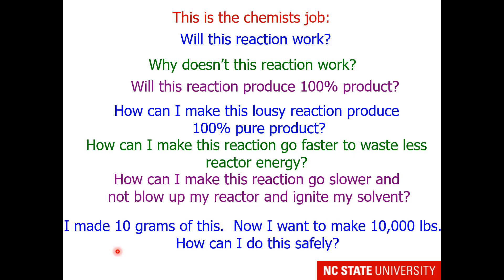I made 10 grams of this. Now I want to make 10,000 pounds. How can I do this safely? If the reaction with 10 grams in your flask raises the temperature by 1 degree Celsius, what do you think it will do with 10,000 pounds? Often we have to heat up reactors to get to a temperature where the reaction proceeds at a reasonable rate, but often that temperature has to be controlled to make sure it doesn't run away.